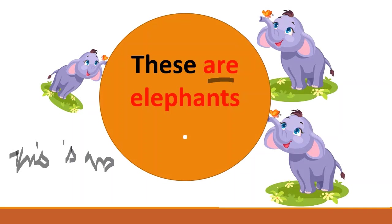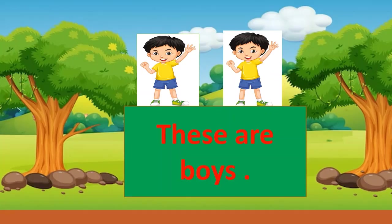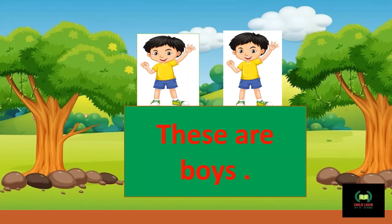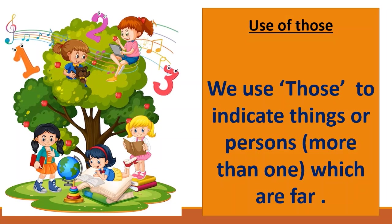These are elephants. Okay kids, now see the next example: 'These are boys.' There are two boys, so we say 'these are boys.'